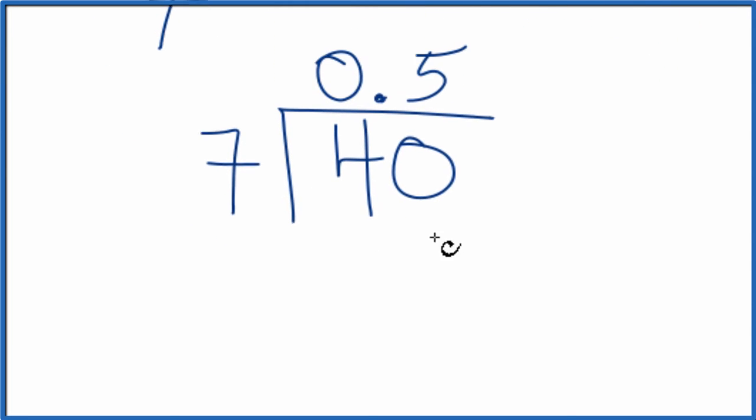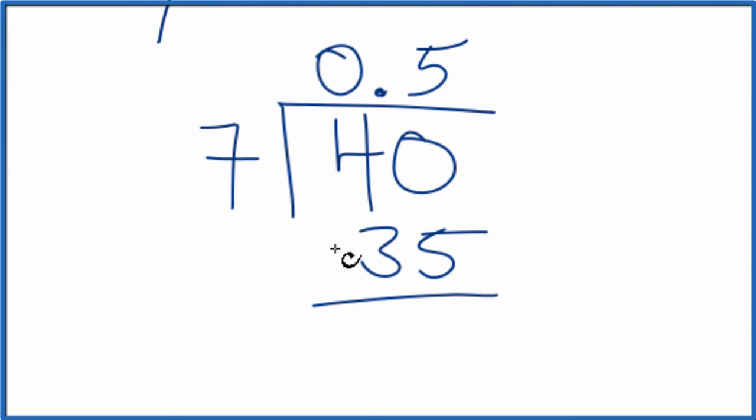5 times 7, that's 35. If we subtract, we end up with just 5. 7 doesn't go into 5, so let's call it 50. We'll move over a decimal place here.